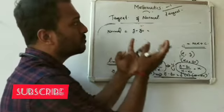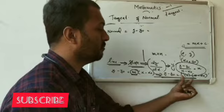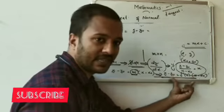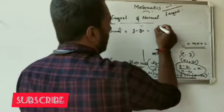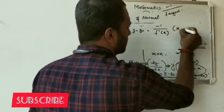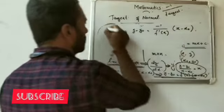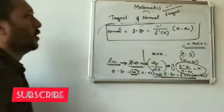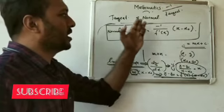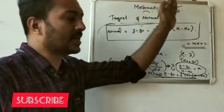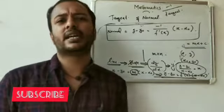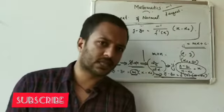Normal slope is minus 1 by tangent slope. Tangent slope is f dash of x, so normal slope is minus 1 by f dash of x. Normal equation: y minus y0 is equal to minus 1 by f dash of x into x minus x0. Okay, very simple.